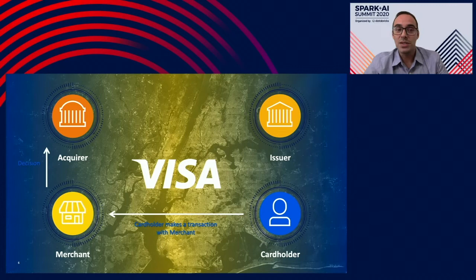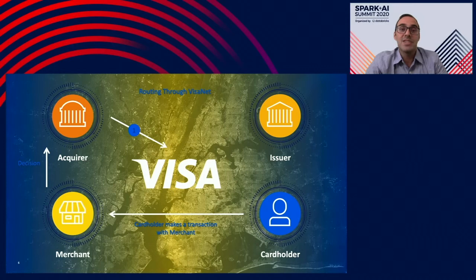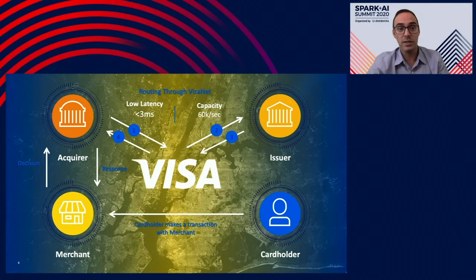Let's see the journey of a transaction. It all begins with a card. You are at a merchant location and need to check out — you swipe or tap your card. The merchant sends that request to the acquirer, who sends it to Visa. The transaction has entered VisaNet, the network built and maintained by Visa. Visa forwards that request to the issuer, who looks at the cardholder's details and provides a response in terms of approval or denial. The request flows back from issuer to VisaNet, to acquirer, and finally to the merchant. VisaNet always makes sure that the transaction is processed securely and promptly.